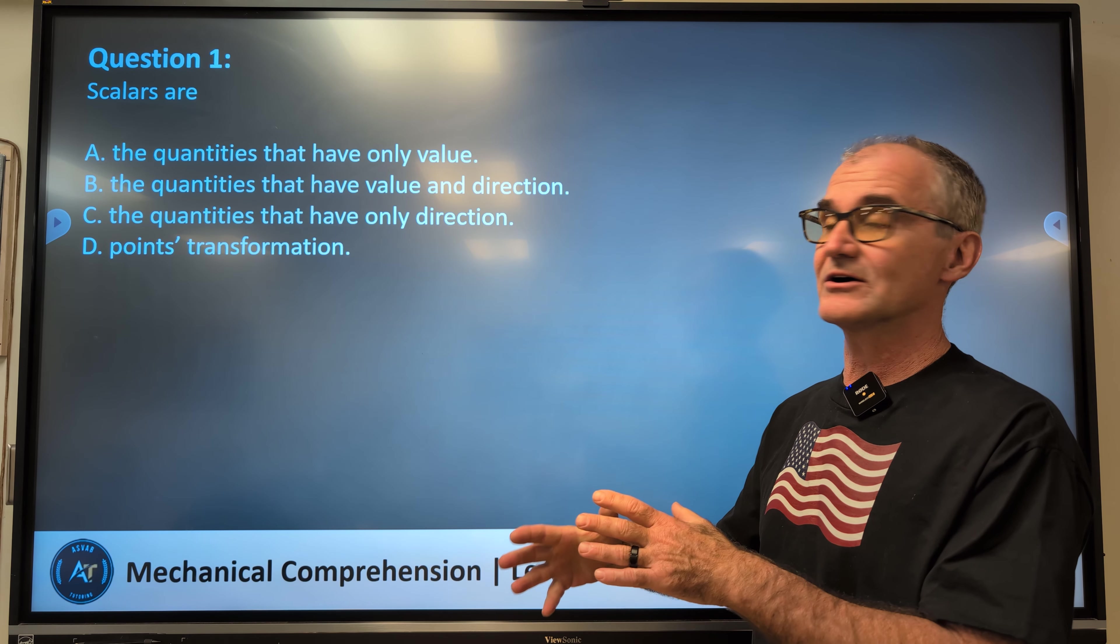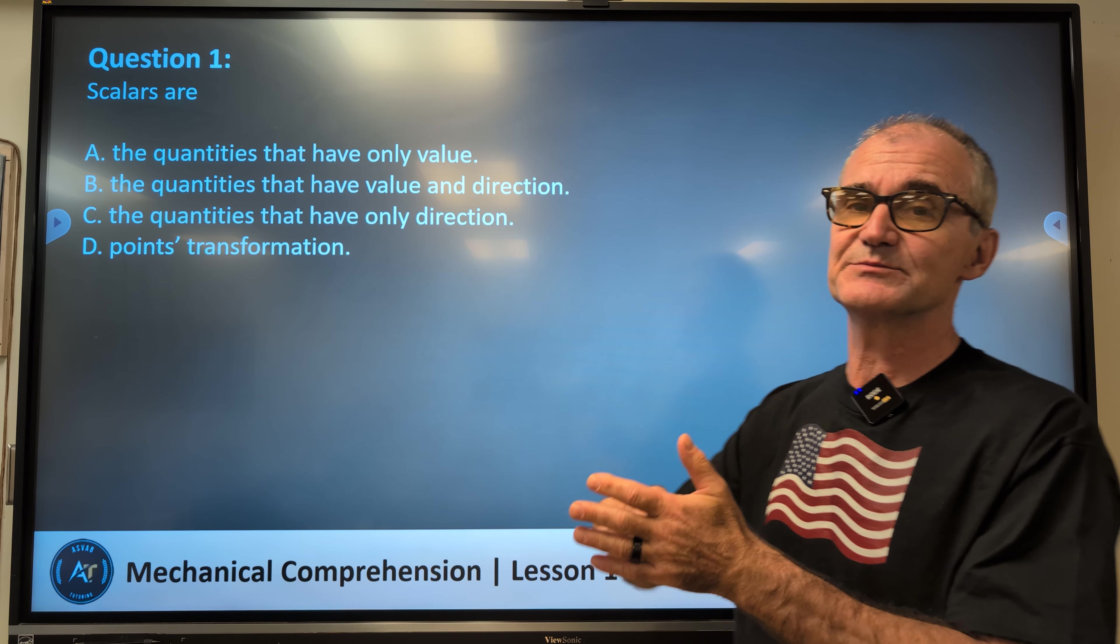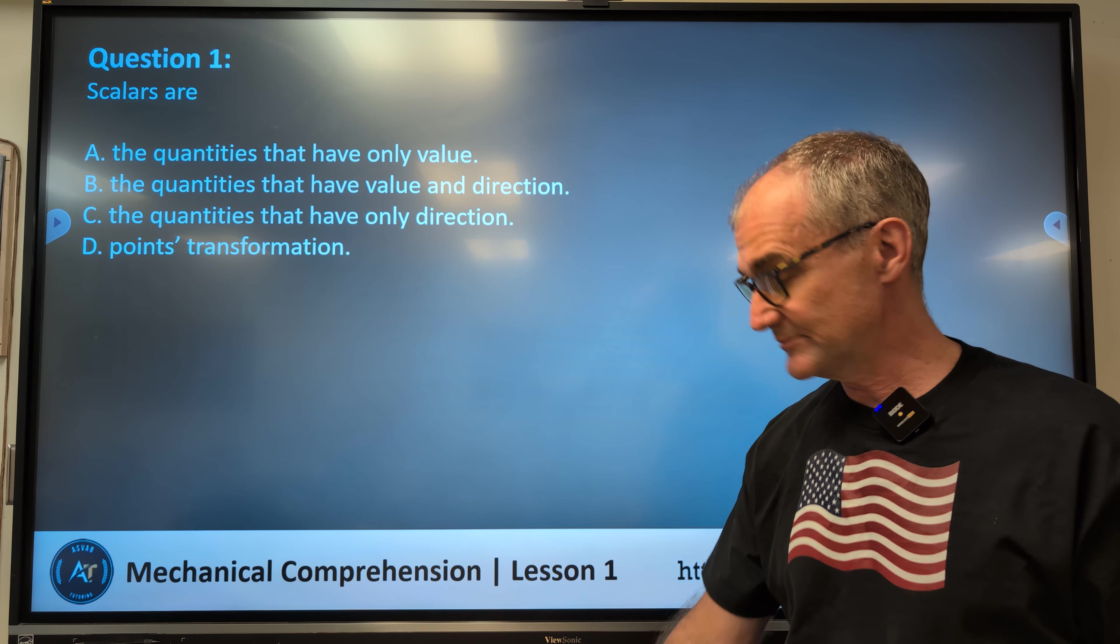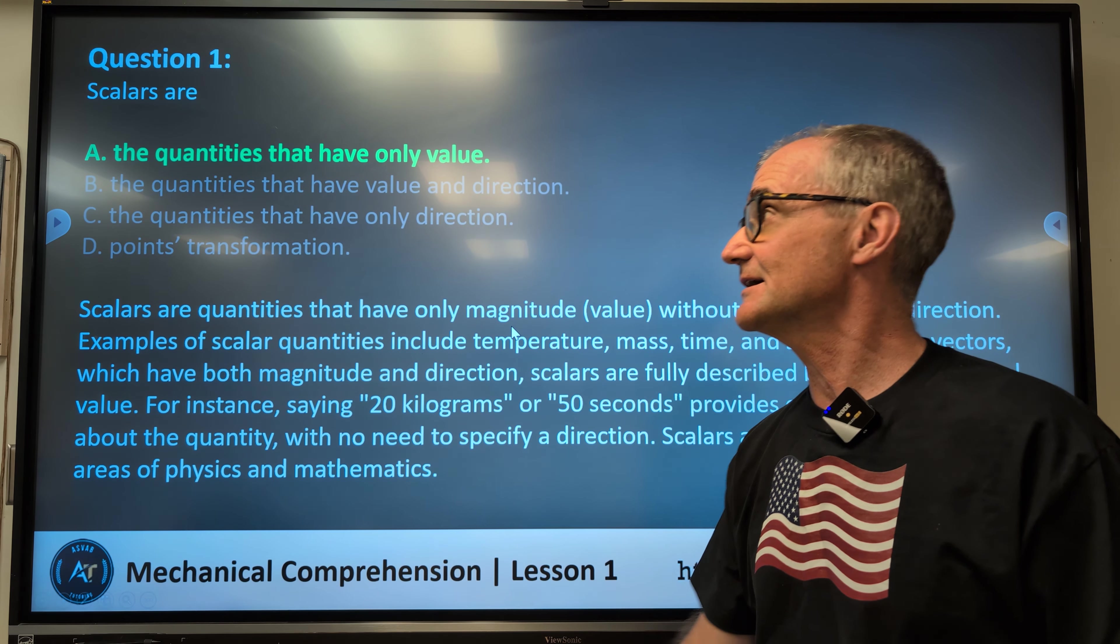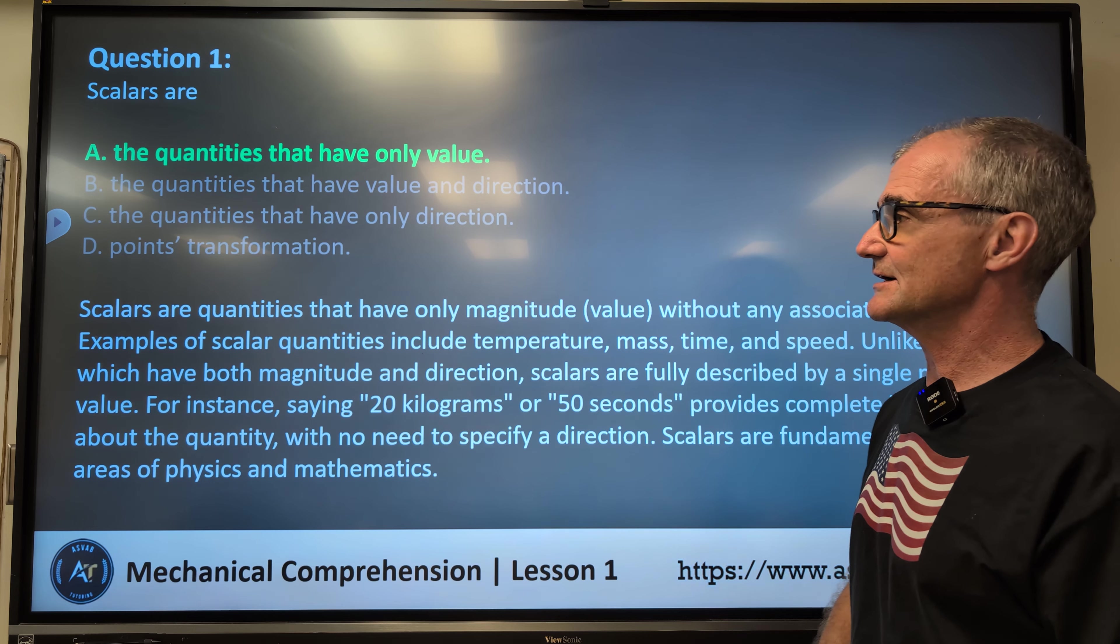What scalars are is they're in the field of vectors. So a vector has both magnitude and direction, but a scalar has only magnitude. So the correct answer is answer A, they only have a magnitude with no direction.